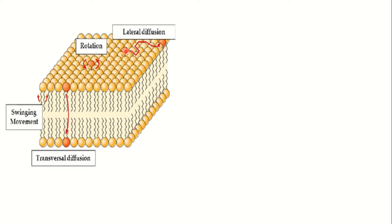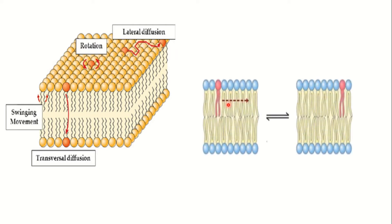The most important movement is lateral diffusion, which means movement of a lipid molecule or protein molecule from one place to another place within the monolayer. We can understand this from a diagram: the lipid molecule shown in pink color is present here but it has movement and changes its place within the monolayer — this is lateral diffusion.